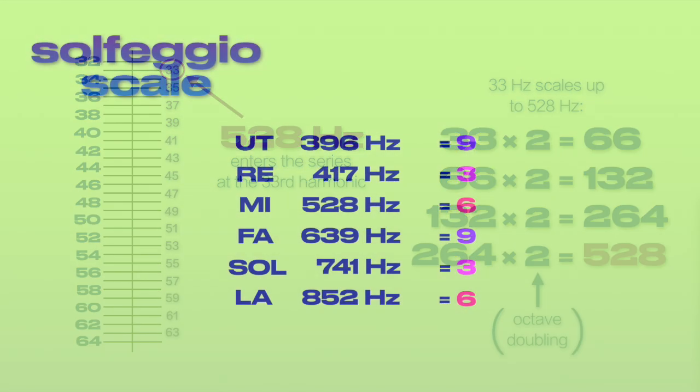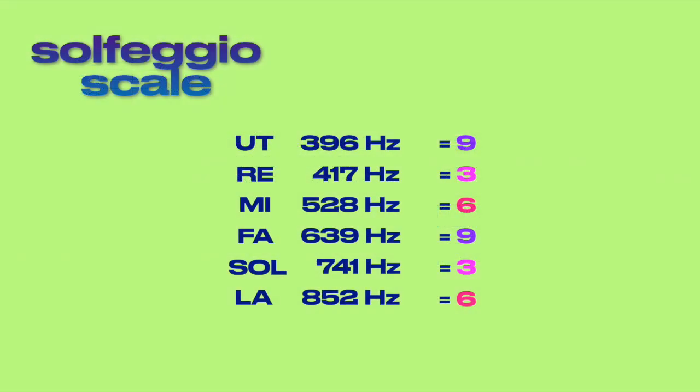The vortex math value of 528 is 6, so the tone is based on the power of 3. The other tones in the solfeggio scale are also based on the power of 3, as the vortex math values show a repeating sequence of 369.